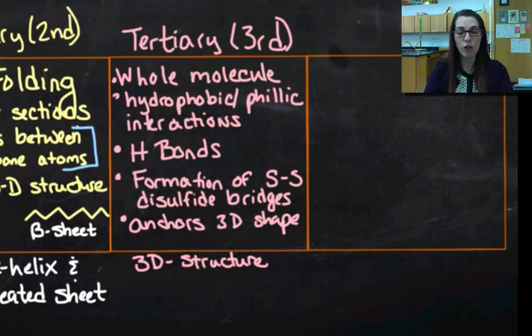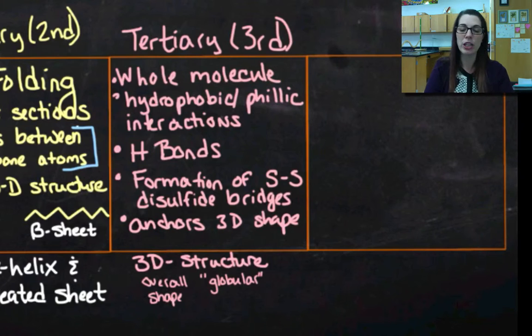So it's my overall 3D structure. Tertiary, third level, is the overall 3D structure. It's the overall globular shape. So when I look at just a picture of the protein, what's that overall 3D shape, that's my tertiary.